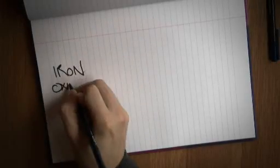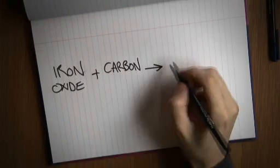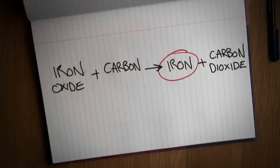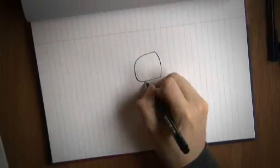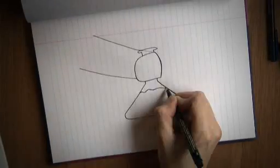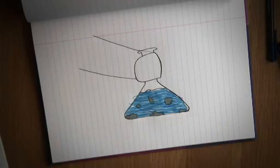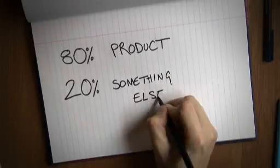So why isn't the yield 100%? Well, it often isn't possible to get 100% yield. Some reactions convert the starting material into a mixture of different products, and only one might be the one you're trying to make. Or if the reaction's reversible, you might end up with some starting material that hasn't reacted in your solution.